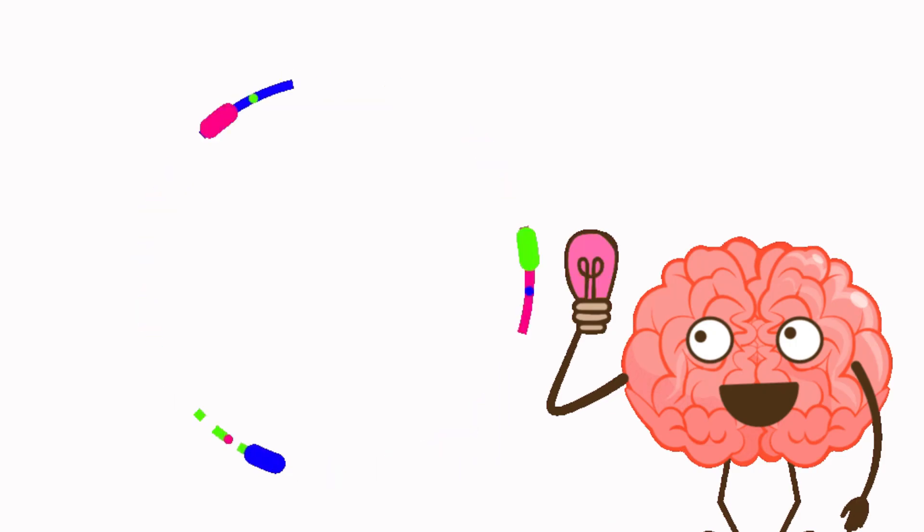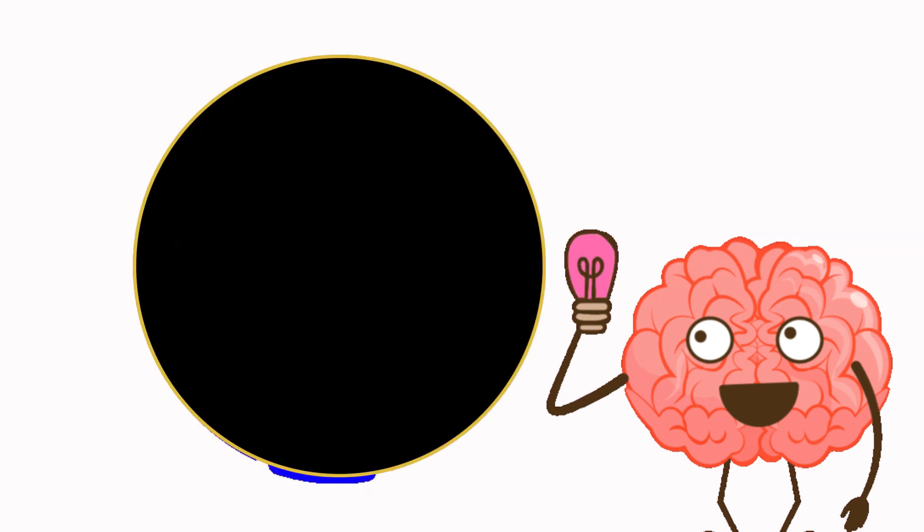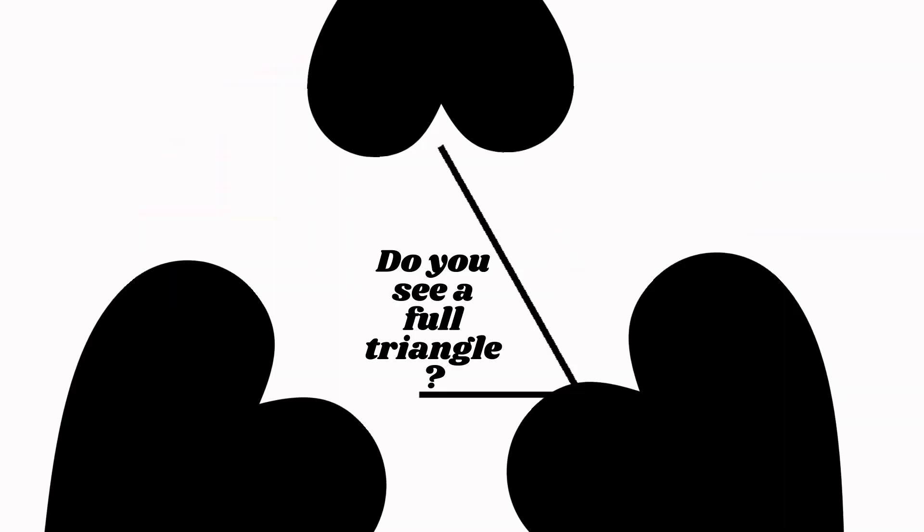Now we are on to the principle of closure. Take a look at this almost circle. Something's missing, right? But wait! What does your brain see? Even with a piece gone, our super brains fill in the blanks. We can't help but see a full circle. That's the principle of closure which is all about our brain's magic wand filling gaps and completing the story.